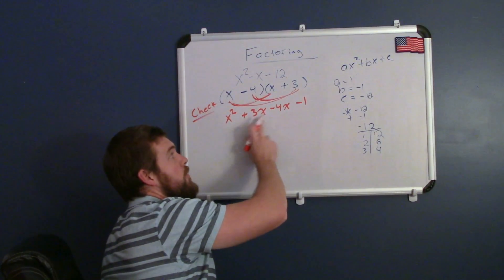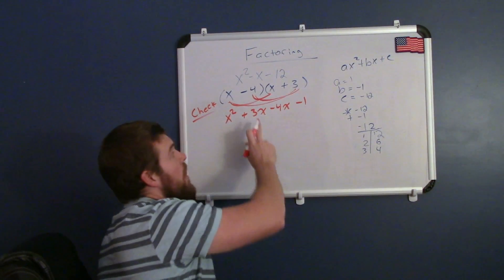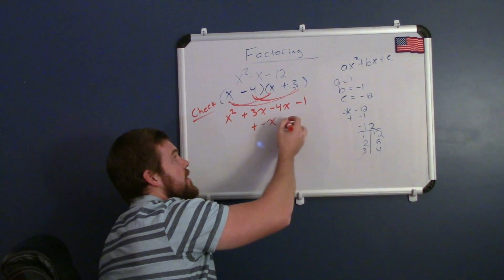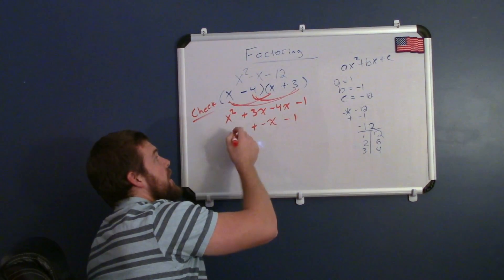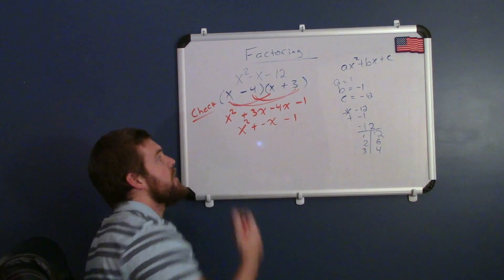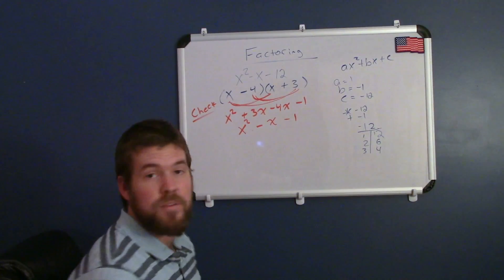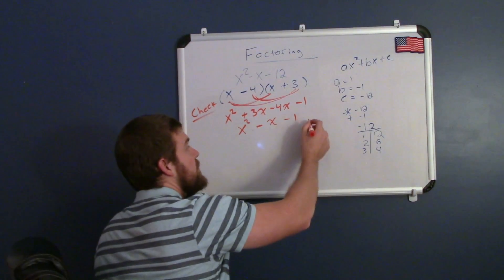Now, I have x squared plus 3x minus 4x minus 12. 3x minus 4x gives us a negative x minus 12. The x squared comes here. Now, I wrote it as plus and minus x, but we know that's going to be the same thing as subtracting an x, and there we go. Our check is correct.